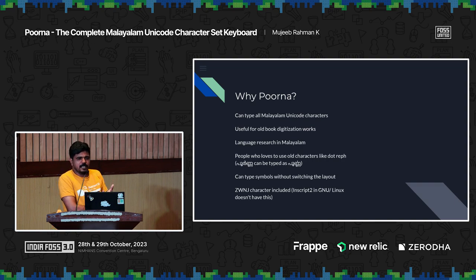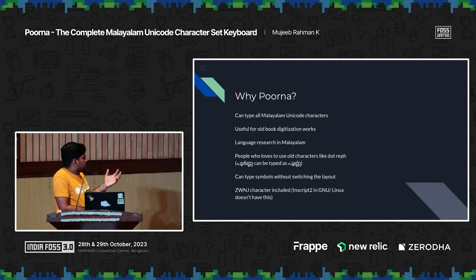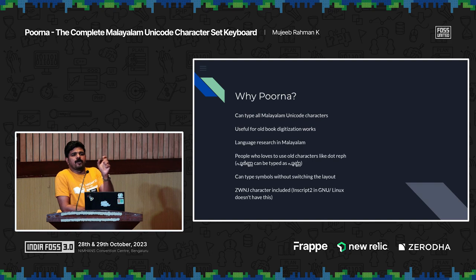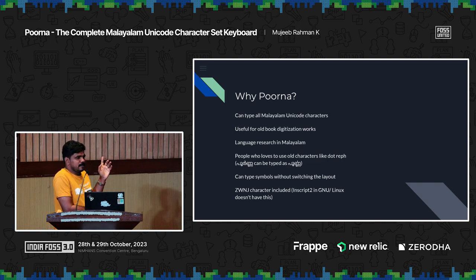Also, in another keyboard, if you have to type less than, greater than, or some symbols, we have to switch to the English keyboard. But with the help of Poorna, you don't have to switch to the English version. You can use the Malayalam version itself. Also, ZWNJ is a character there, which is used to split characters. Like, if you write a word, it will join — so if you have to split the Malayalam character, you can use the ZWNJ character, which is included in this layout.